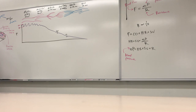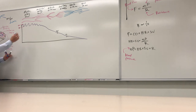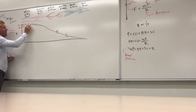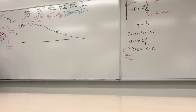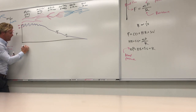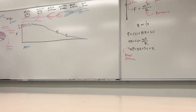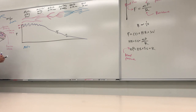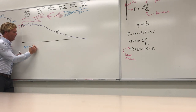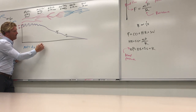An estimate of the running average pressure in the arteries is called the mean arterial pressure (MAP). For blood pressure of 120/80, you might guess 100 — halfway between — but MAP is calculated as: MAP = diastolic pressure + (pulse pressure / 3), where pulse pressure = systolic minus diastolic.